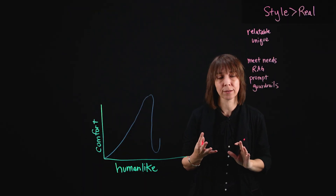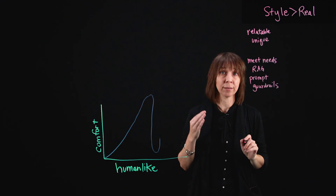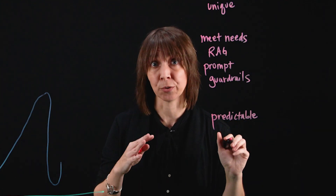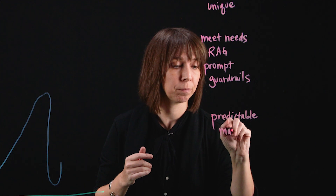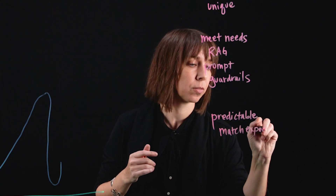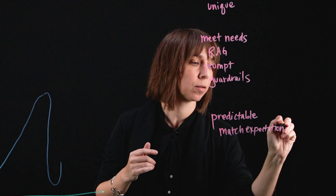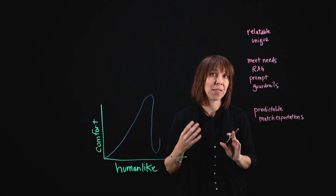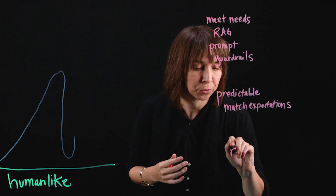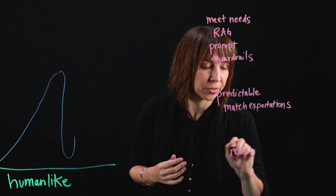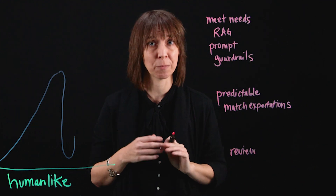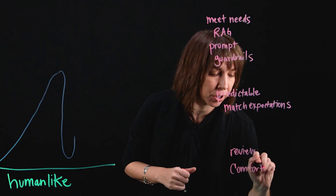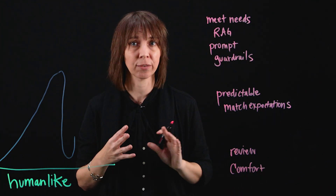It's good to implement guardrails in order to increase accuracy while decreasing bias and hallucinations. Create consistency in tone and behavior — consistent, predictable behavior builds trust, and you want to match the user's expectations. Also, you want to monitor user comfort levels and then iterate. Create a system to review user friendliness and then modify based on that. Once you know what the comfort levels are, you can make your assistant more or less human-like.